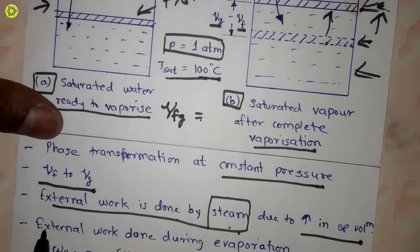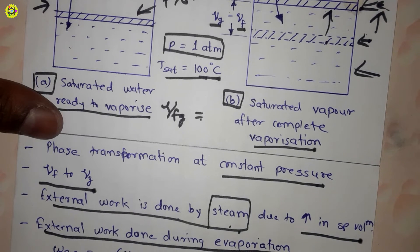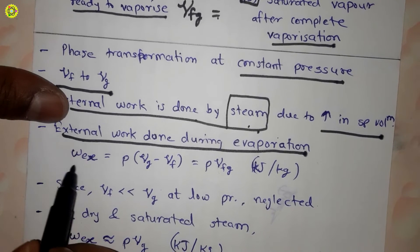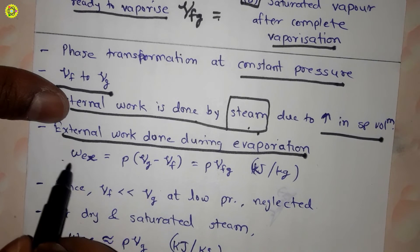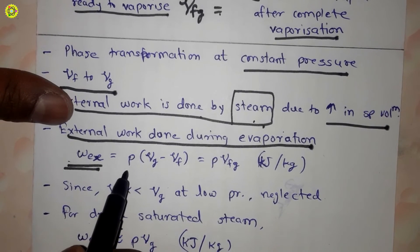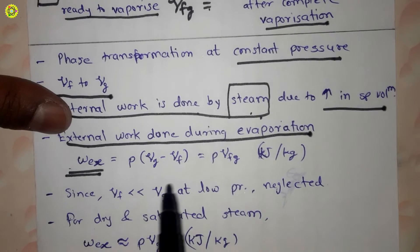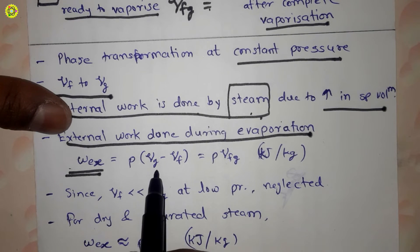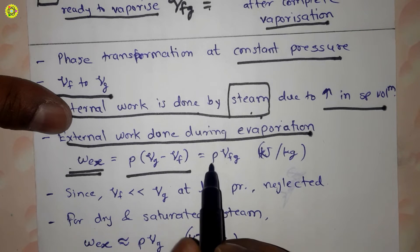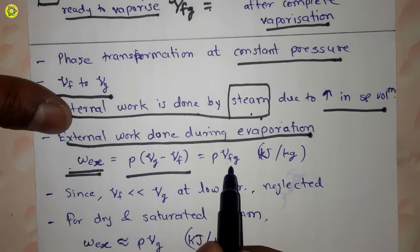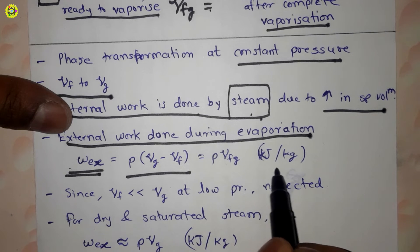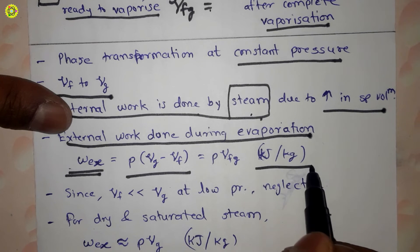The external work done during evaporation is given by the formula: w_ex = p × (vg − vf), which is equal to p × vfg, and it is measured in kilojoules per kilogram.